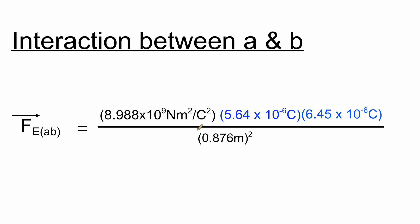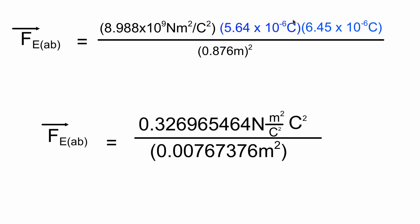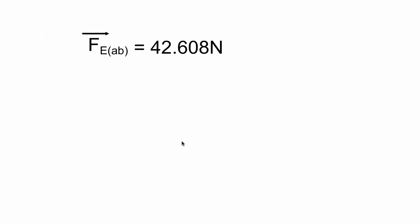We multiply out the top and square the bottom. On the top we get 0.326965464, with units of newtons meter squared per Coulomb squared times Coulomb squared. On the bottom, squaring the distance of separation gives meter squared. The meter squared and Coulomb squared cancel out, leaving only newtons as the unit. Numerator divided by denominator gives us 42.608 newtons.